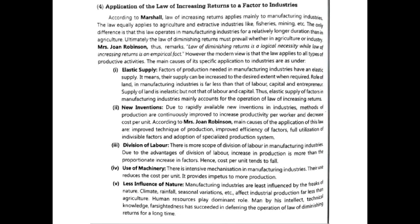Next is the use of machinery — when machinery is used, production automatically increases and cost decreases. Next is less influence of nature. Manufacturing industries are less affected by factors like climate, rainfall, and seasonal variation, unlike agriculture which is greatly affected. This is why manufacturing industries better follow the law of increasing returns.